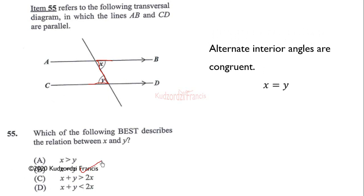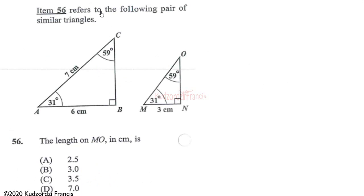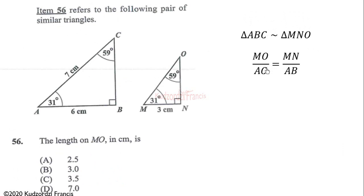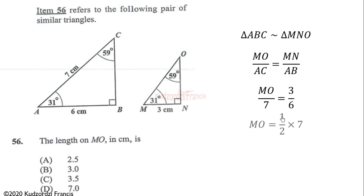Question 56 refers to a pair of similar triangles. Triangle ABC is similar to triangle MNO, meaning corresponding sides are proportional. So MO/AC = MN/AB. Substituting: AC = 7, MN = 3, AB = 6. Therefore MO = (3/6) × 7 = 0.5 × 7 = 3.5 centimeters. The correct answer is C.